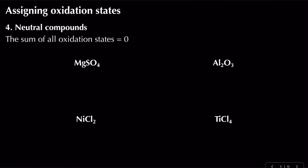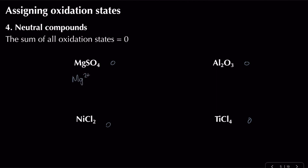The fourth rule: for neutral compounds, the sum of all oxidation states equals zero. For magnesium sulfate, Mg²⁺ gives magnesium an oxidation state of +2, and sulfate is −2 overall. Within sulfate, oxygen is −2 and there are four of them giving −8, so sulfur must be +6 to get from −8 to −2.